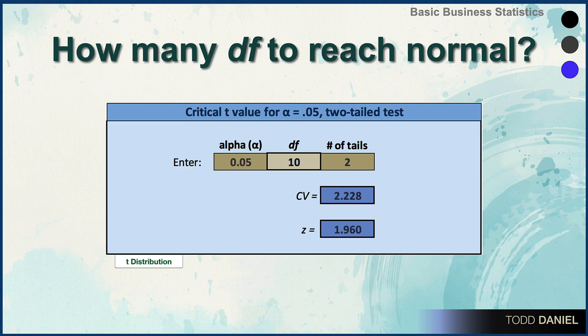Increase the degrees of freedom to 30. Now our critical value becomes much closer — it's 2.04.